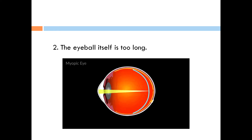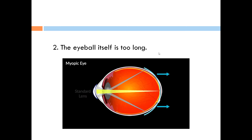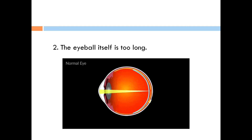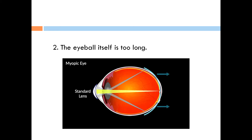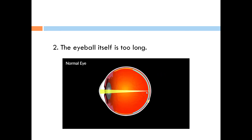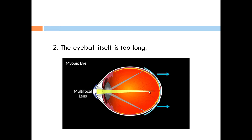Number two, the eyeball itself is too long. Since the eyeball is elongated, the ray of light cannot be situated onto the retina because the elongation of the eyeball prevents the light from falling onto it.